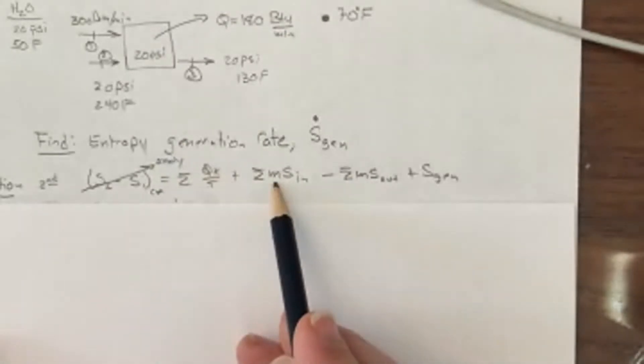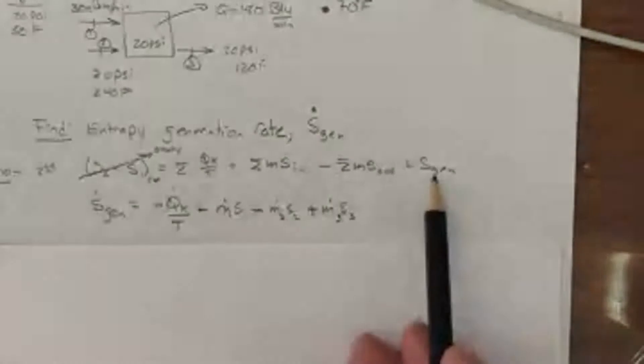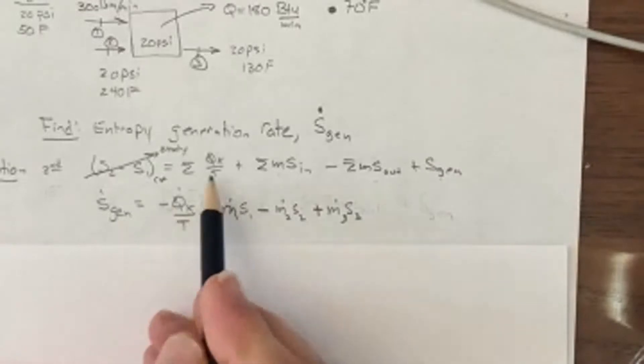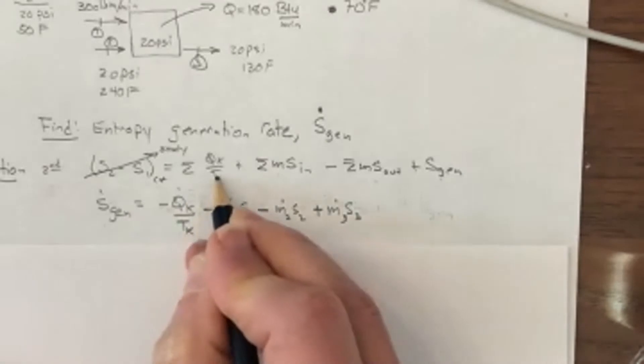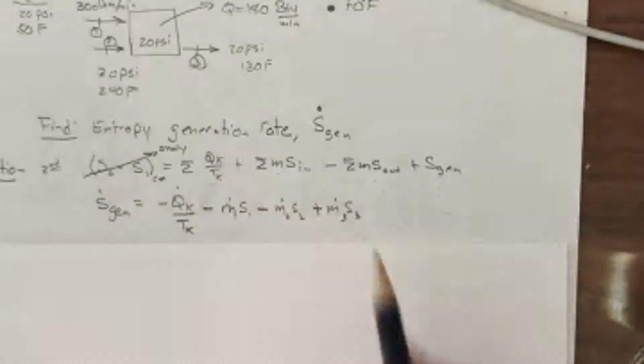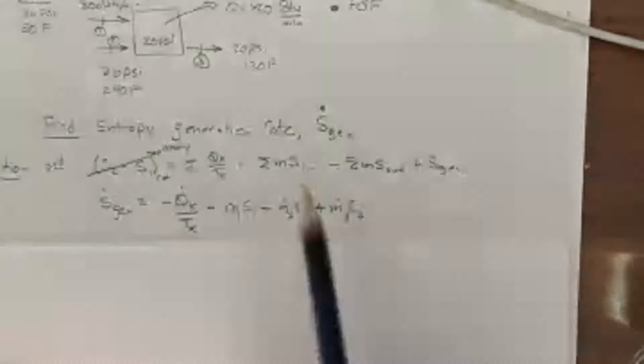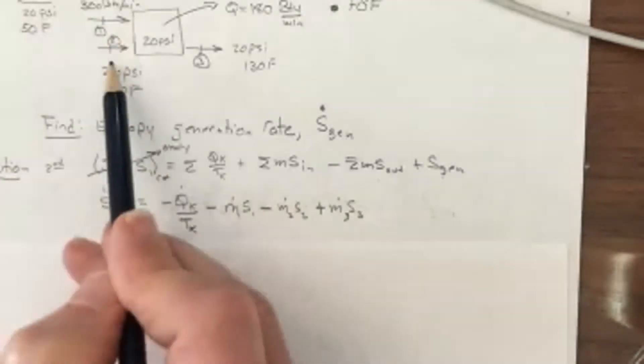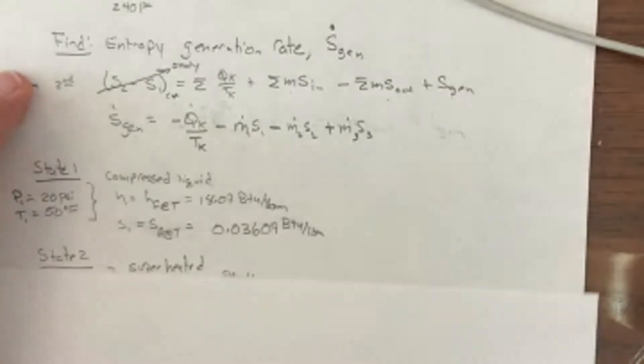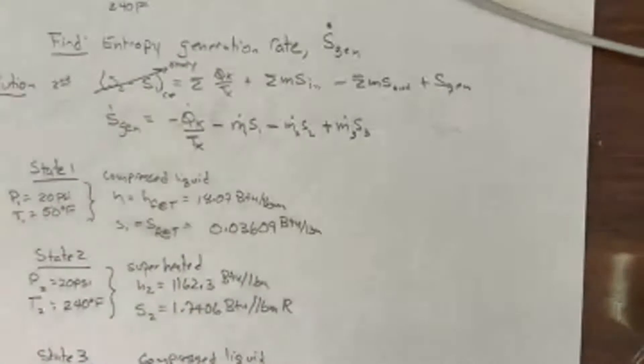You've got two streams in and one stream out. So I could rearrange this equation for S gen, and S gen would be equal to minus this heat exchange Q sub K divided by T sub K and then minus the inlet stream minus the second inlet stream plus the third inlet stream. I number these streams - this one is going to be called one, two, and three. So I think we got some information here. Let's fix the states at this point and see where we're at.